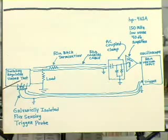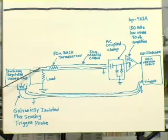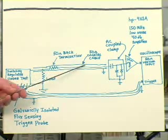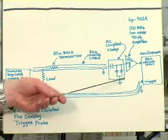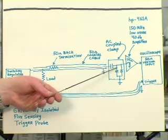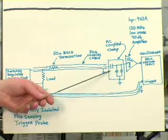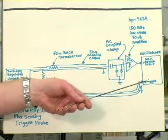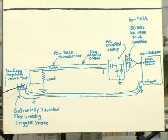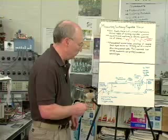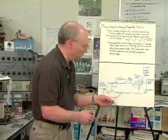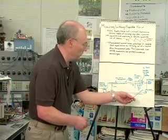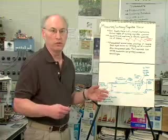The switching regulator is represented by the box to the left. We institute a 50 ohm coaxial measurement path with a back termination out of the switching regulator's dummy load, down a 50 ohm cable, through an AC-coupled clamp — basically a capacitor and clamp diodes in a 50 ohm coaxial enclosure — in front of the preamp. The preamp output feeds a 50 ohm scope triggered by a flux sensing probe located above the magnetics, breaking any ground loop path between the scope and the regulator board with no galvanic connection.